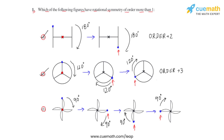Since this figure has been rotated four times by an angle of 90 degrees to get back to the original question figure, the order of rotation for figure F is 4, which is definitely more than one.